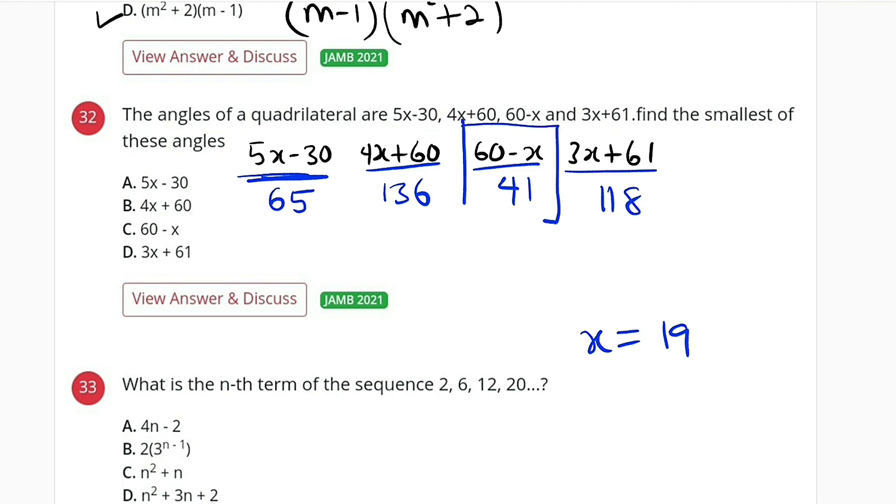So what is the smallest here? The smallest here is 41 degrees, which is 60 minus x, option C.